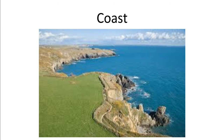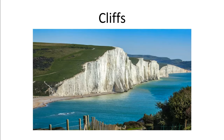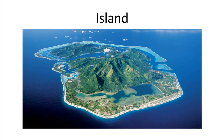We have the ocean, the sea, and the coast. The coast is the area of land between the land and the sea. Then we have cliffs, the sea coast, and the island.